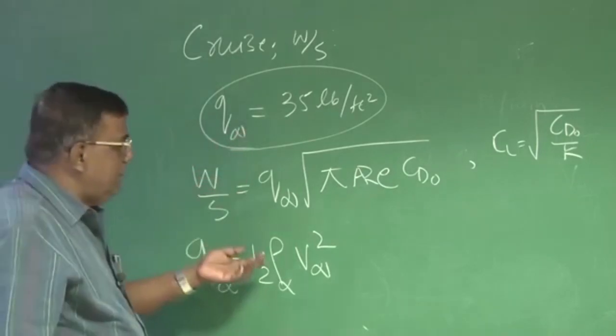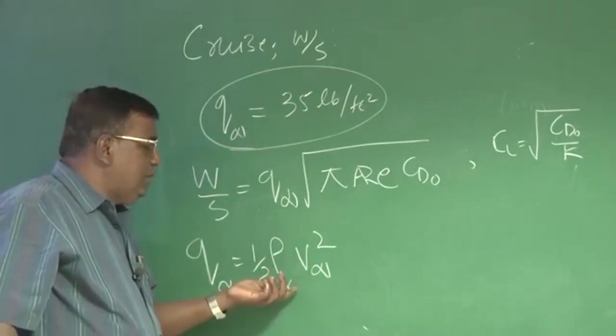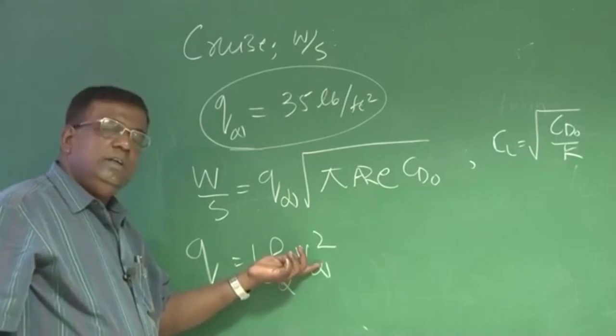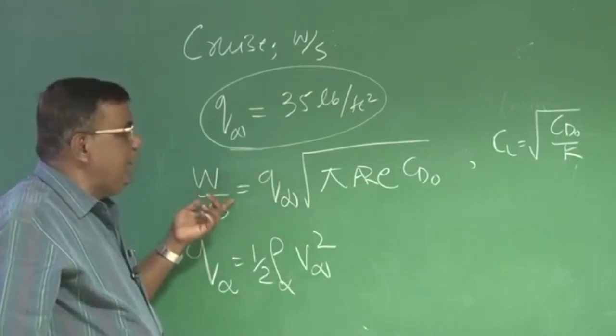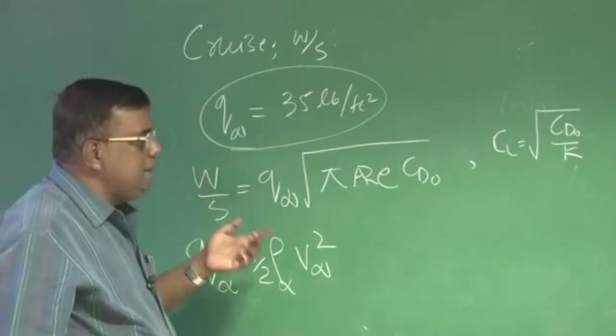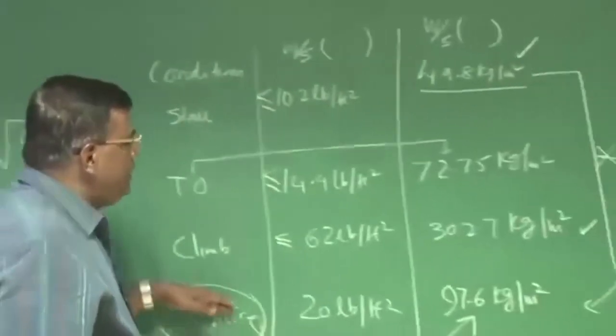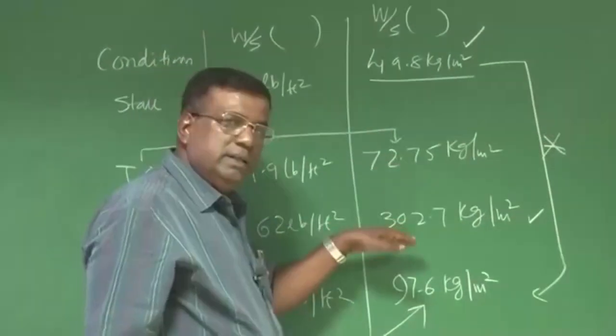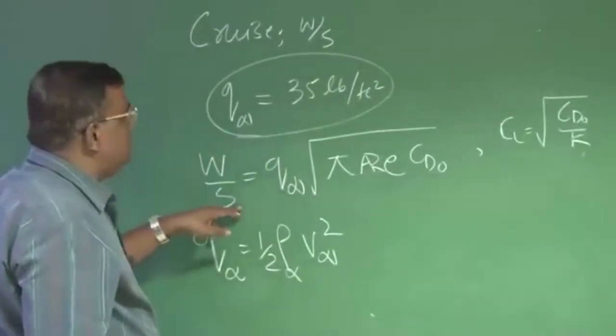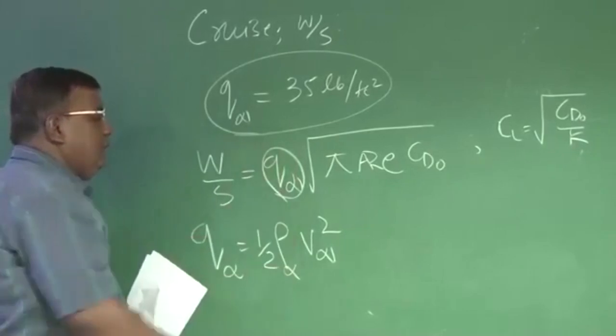If I want to tweak this W by S, suppose I want to see that W by S, I want to increase from 100 to 150, so that I can do a compromise. That only way I can do it is, I change the dynamic pressure, which in turn means either I come at a lower altitude, which you may not like, or you increase the speed.